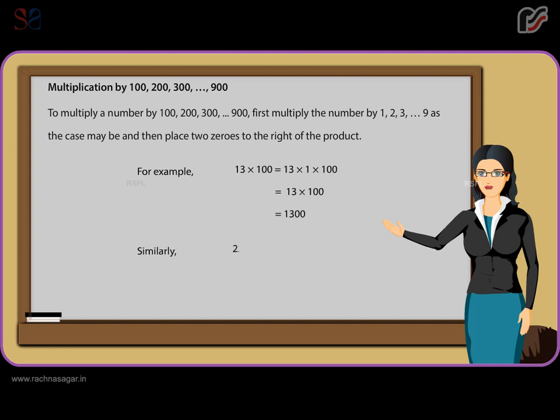Similarly, 22 x 200 is equal to 22 x 2 x 100 is equal to 44 x 100 is equal to 4400.